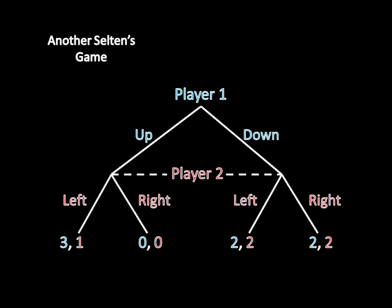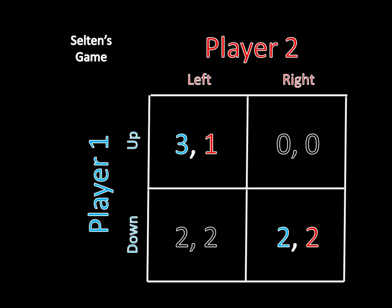And there's a big difference between the two, right? The simultaneous move game has two subgame perfect equilibria, up left and down right, and in this case they are just the Nash equilibria of the matrix game.